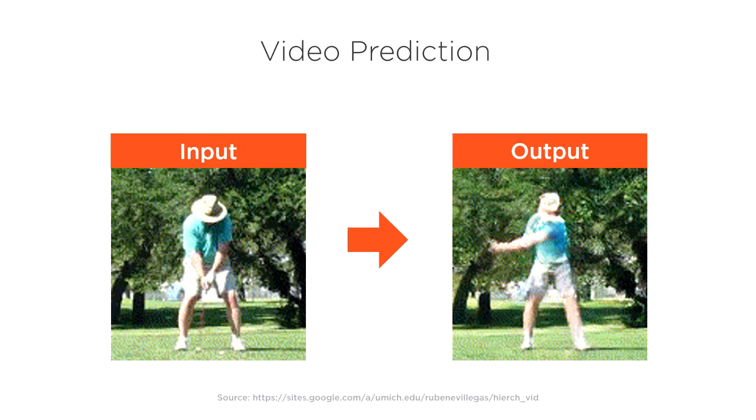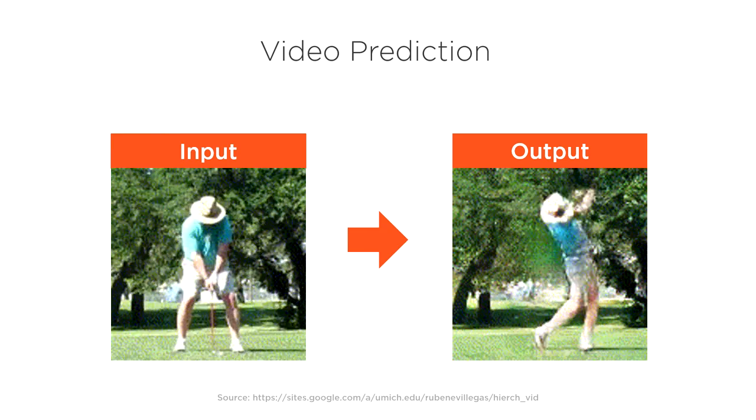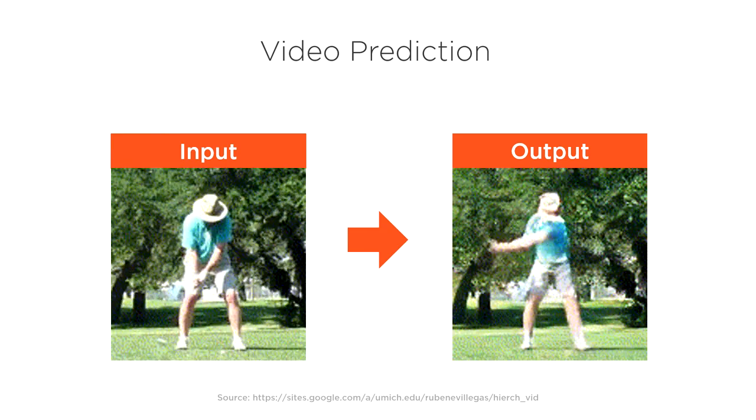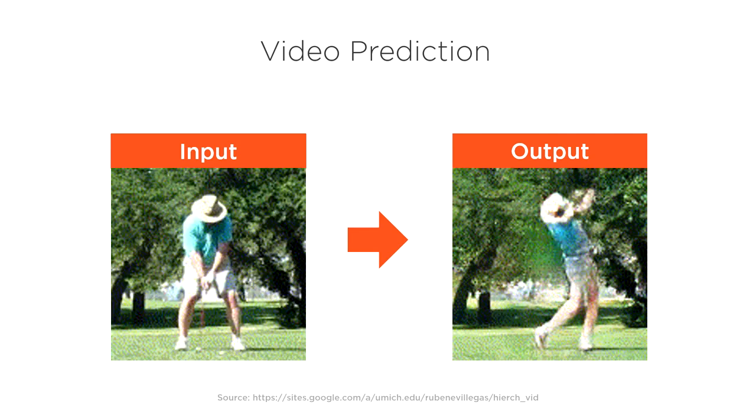what will likely happen next in this video? For example, given 10 frames of this golf video, we can predict the next 30 frames. We provide the model with a few frames of video as input, then the model produces a prediction of the next few frames of the video as output.